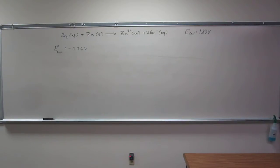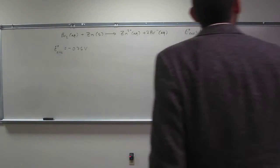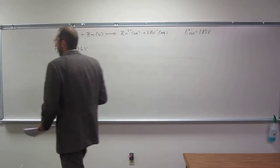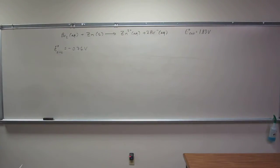The standard cell potential is 1.83 volts. Calculate the standard potential of bromine given that the potential for zinc is negative 0.76 volts.